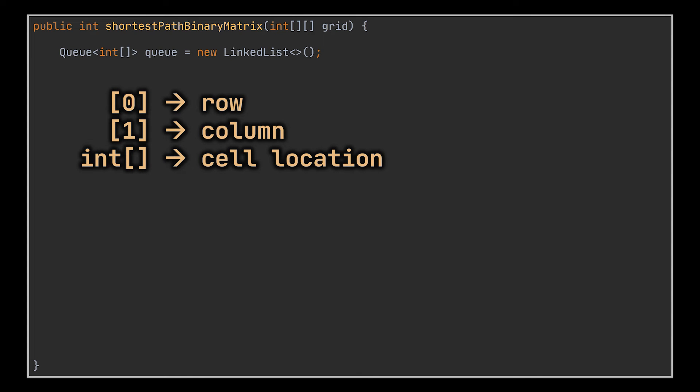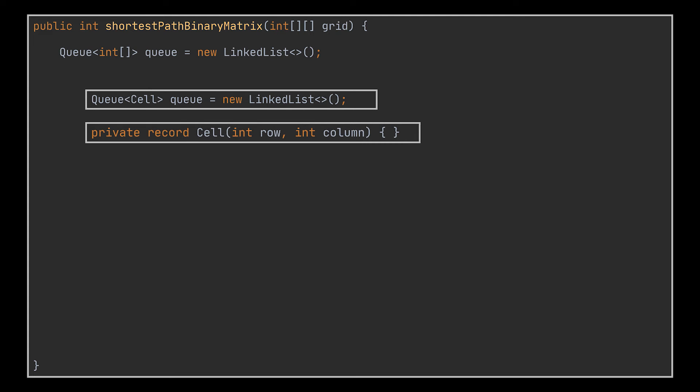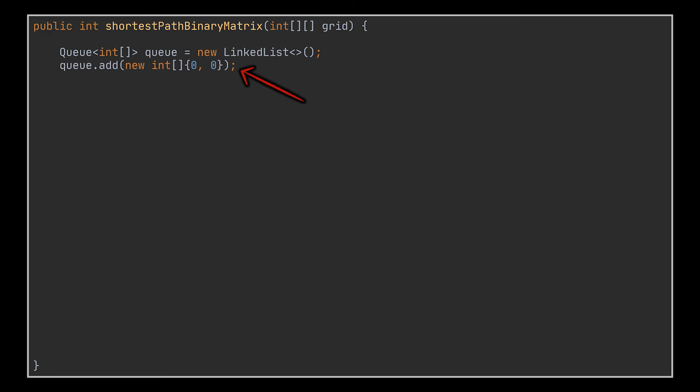This queue will store the elements we're iterating over, which are ultimately the cells of the matrix represented here by an array of two elements. The first one will be the row index and the second will be the column index. You can also take a more object-oriented approach and encapsulate each cell in its own class or record. For now, the two-element array will do just fine.